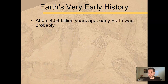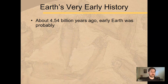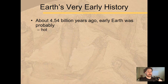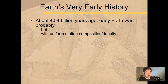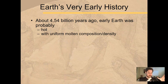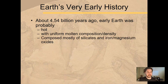Earth — 4.54 billion years old. But early Earth was definitely different than what Earth looks like now. Early Earth was very hot. It kind of had a uniform molten composition and density — molten meaning liquid rock. So it was basically a big ball of lava and magma.